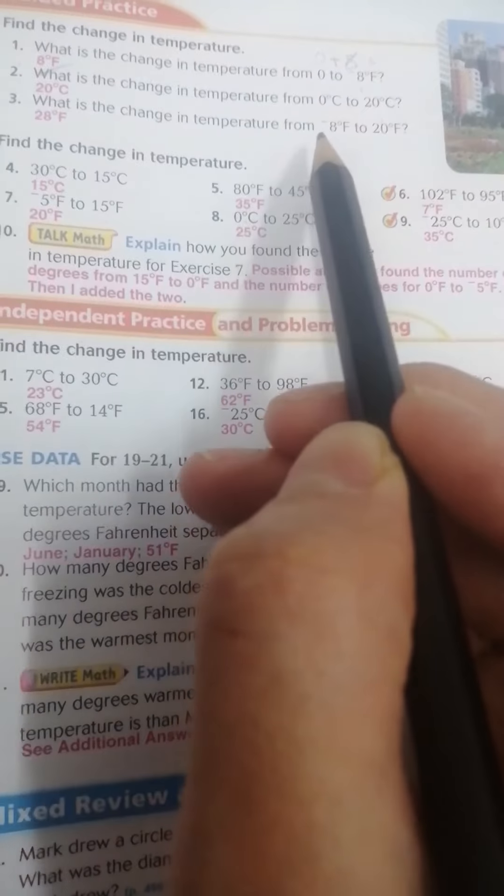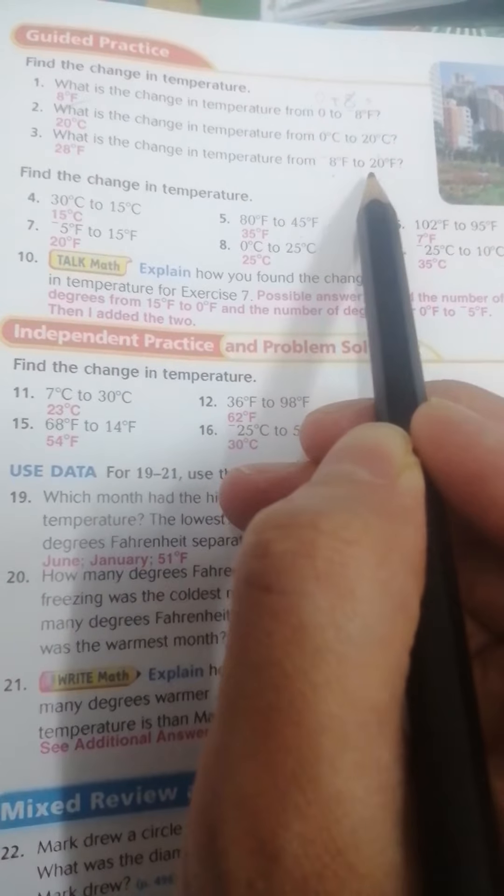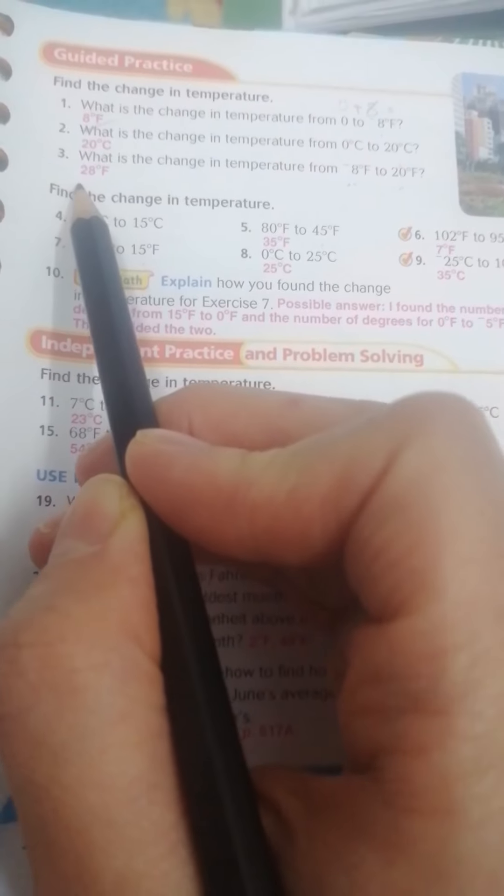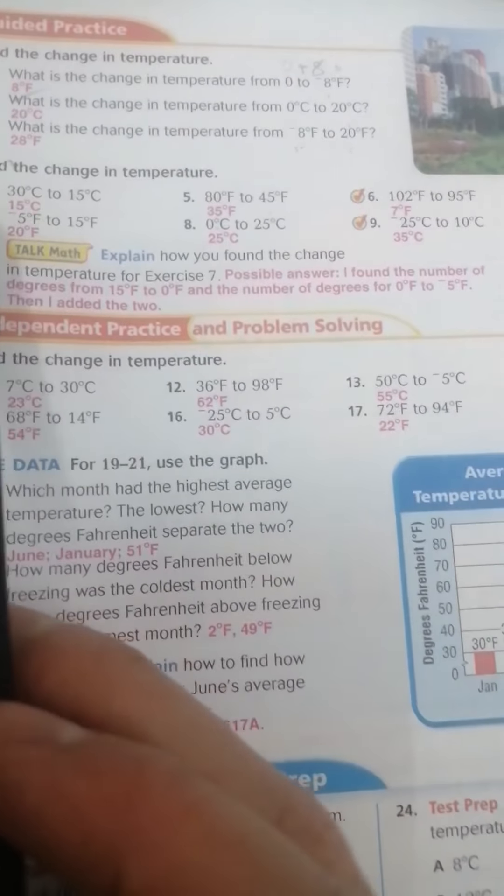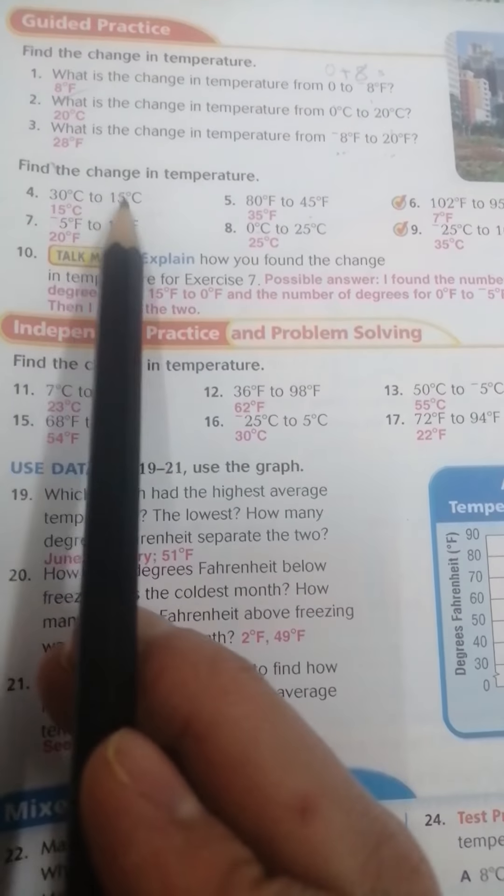And here, 0 to 20. Start 0 plus 20 equals 20. Here, negative 8 and 20, then make 20 plus 8, then equals 28 Fahrenheit.